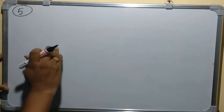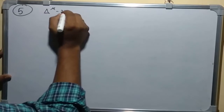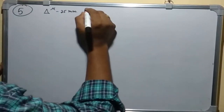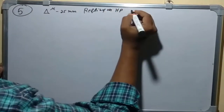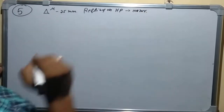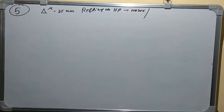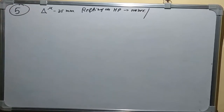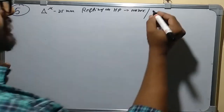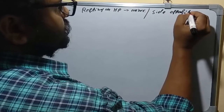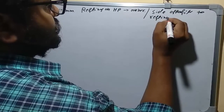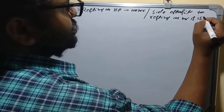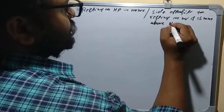We will note down the data for three steps. First, the shape given is a triangle of 25 mm sides. Next, we check the resting condition — it is resting on HP with a corner resting. For the second step, we check the surface or lamina inclination. In this problem, surface inclination and lamina inclination are not directly given. Instead, they give that the side opposite to the resting corner is 15 mm above HP.